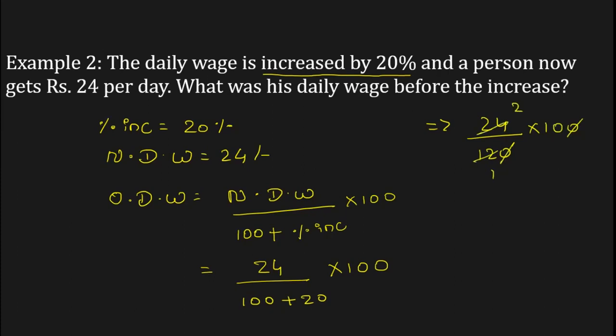12 into 24 is 2, and 2 into 10 is 20 rupees. So 20 rupees is the daily wage before the increase. In this way you can solve the given problem.